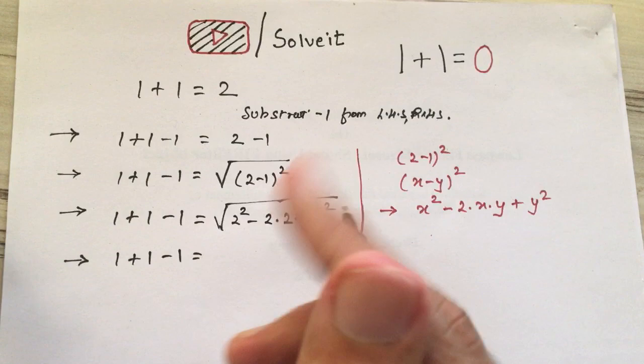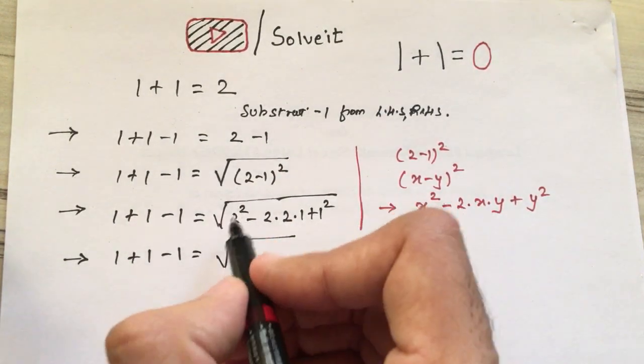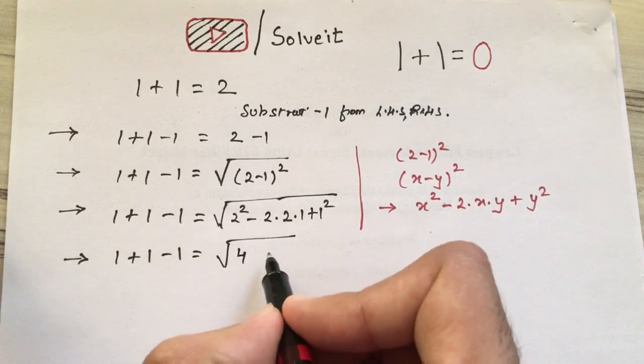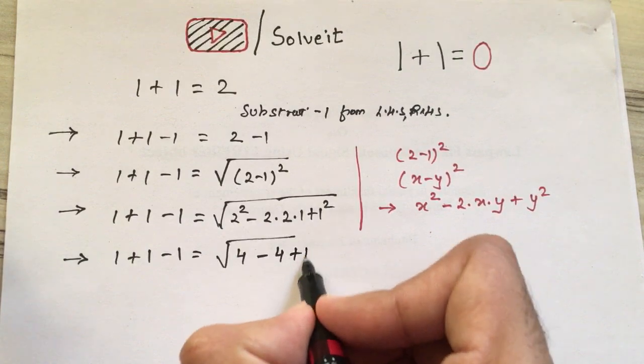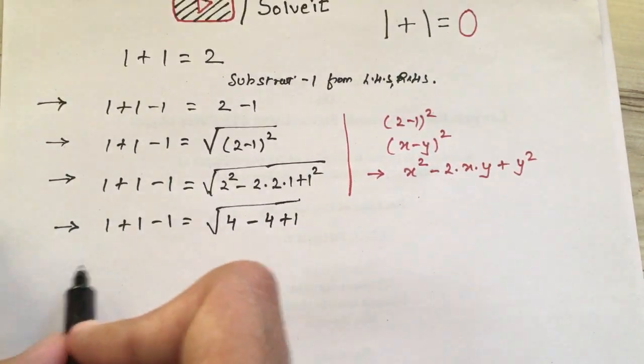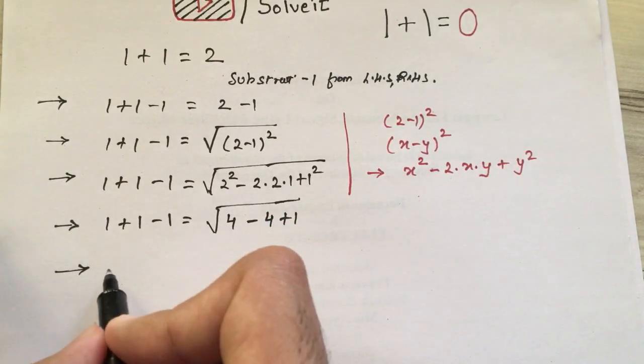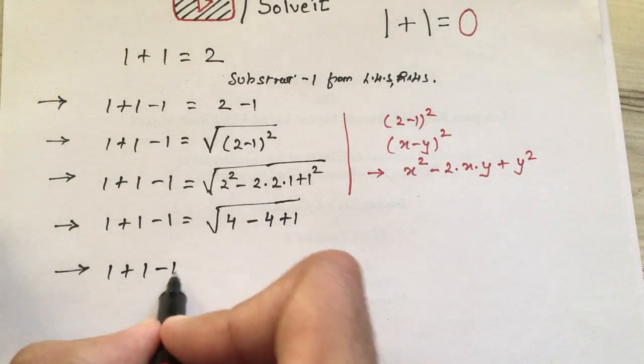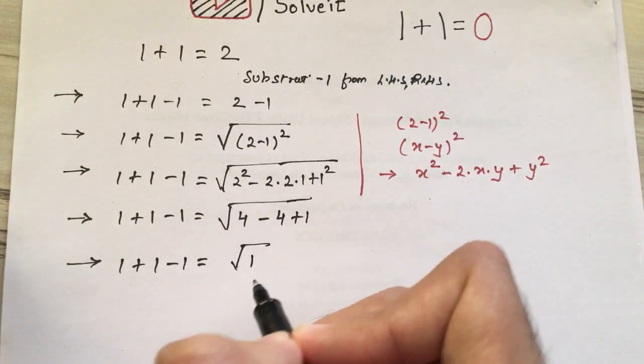If you take it, 2²=4, that is 2×2, minus 4 (that is 2×2×1), plus 1². 1²=1. So we have got it. Next we will be proceeding: 1+1-1 equals √(4-4+1). As 4-4=0, we get √1.